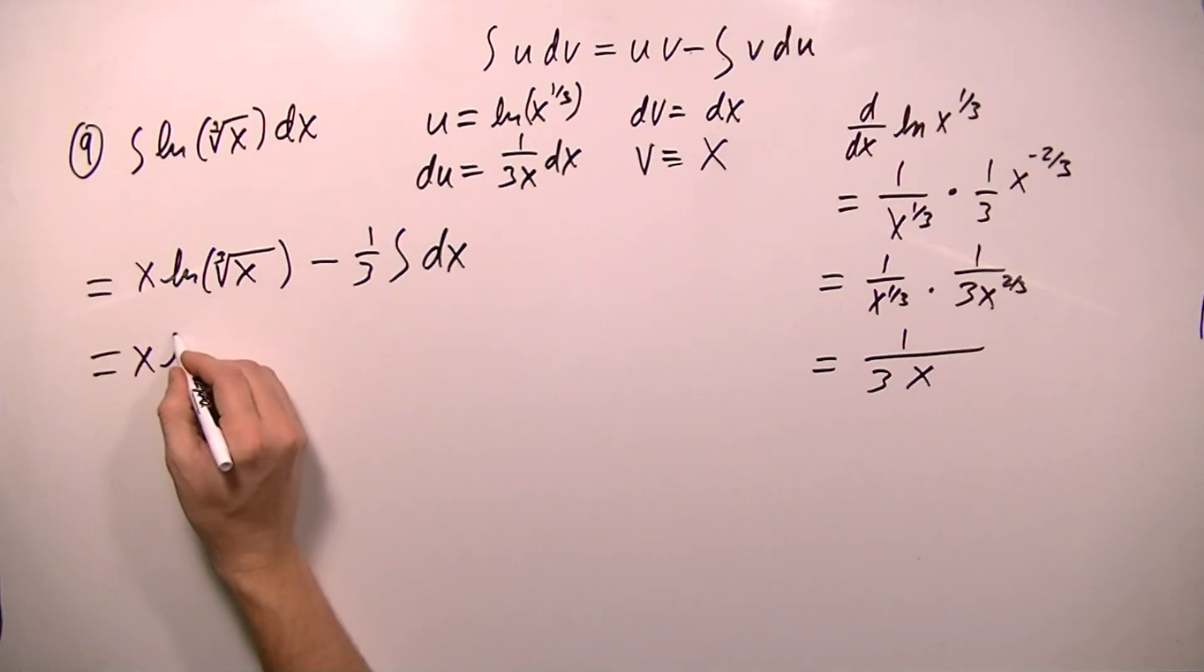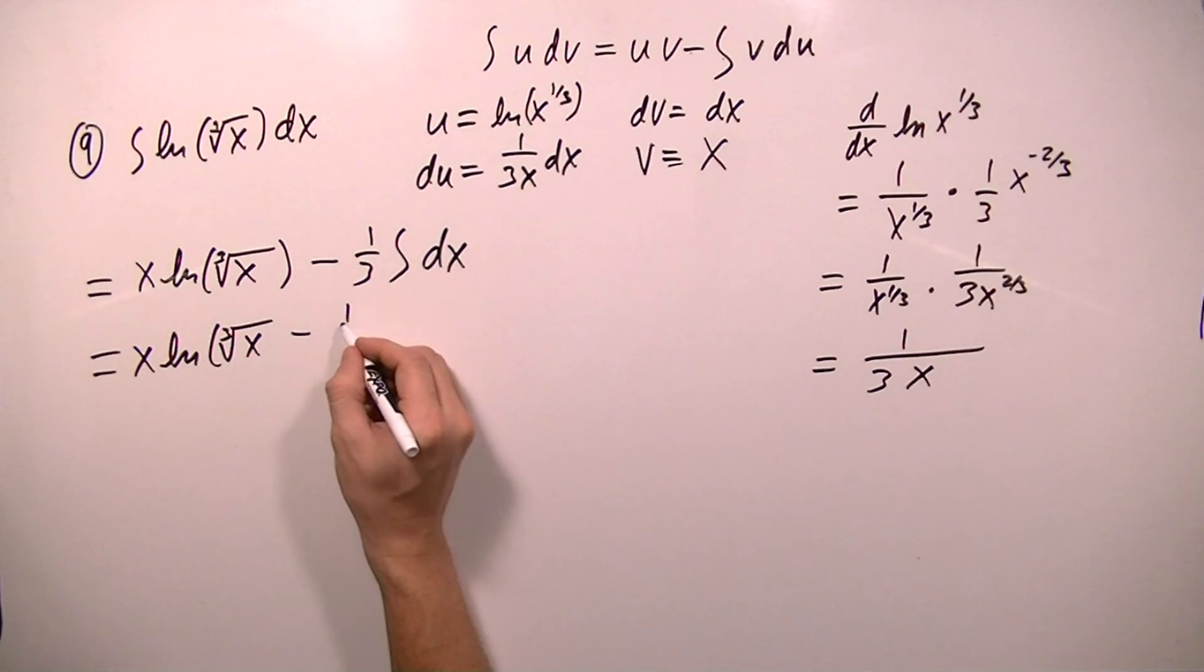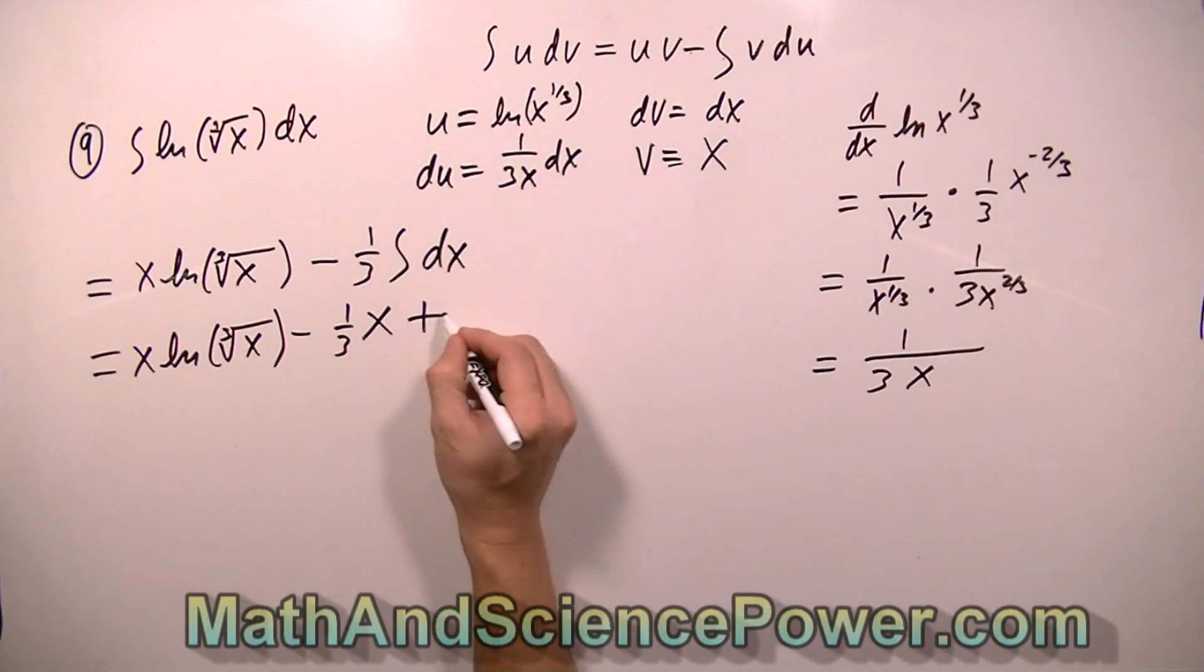So now I evaluate the integral, and this equals x ln cube root of x minus 1 third, and the integral of dx is x. And we can't forget to add the c here, because we're taking an indefinite integral.